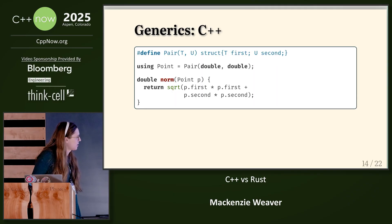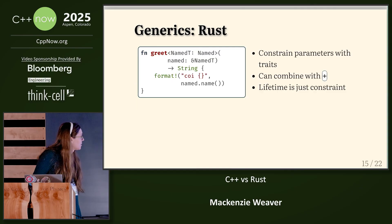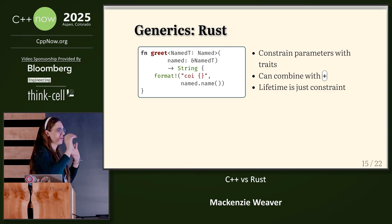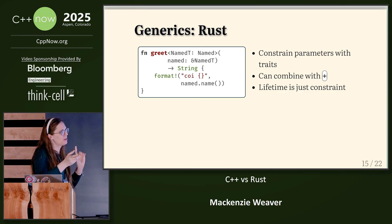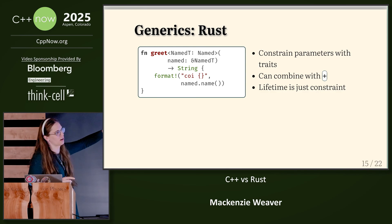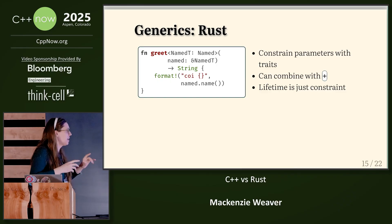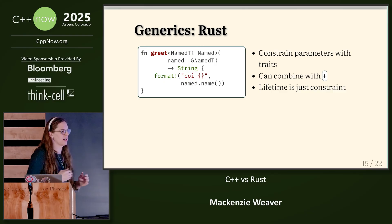So let's look at generics real quick. This is how we do generics in C++. It's a lot more flexible — you can do anything you want with generics. However, in Rust, you're a little bit more principled. You actually have to define these traits. The reason we want to define them is this constrains what we can have on the template parameter — it's kind of like concepts, but you have to fulfill that contract or else it will not compile. This is actually part of the compilation requirement for this function.